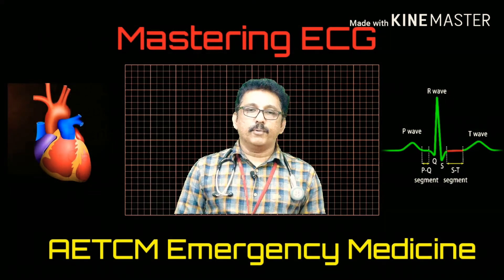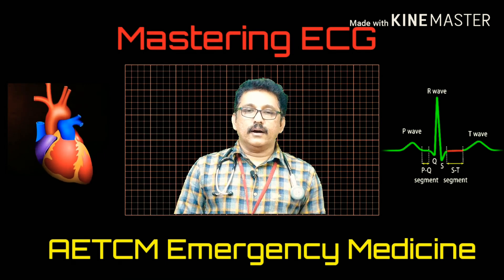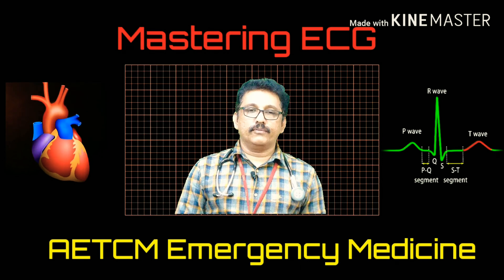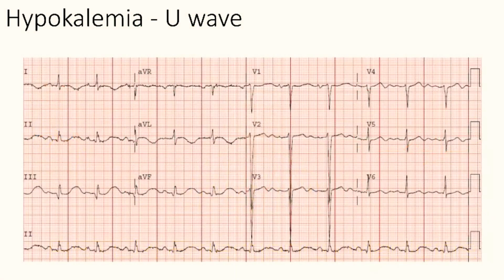Classically, U-waves are described in hypokalemia. When somebody has very low potassium — like 2 or 2.5 — and you take an ECG, always look at leads V2 and V3. In this ECG you can see a small upward deflection after the T-wave — that is the U-wave. A prominent U-wave indicates hypokalemia.